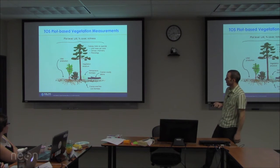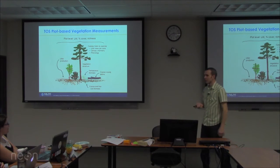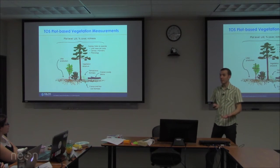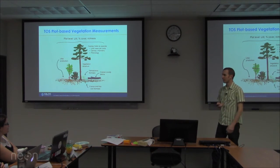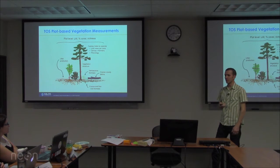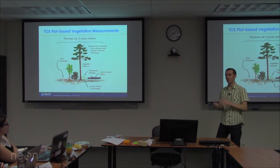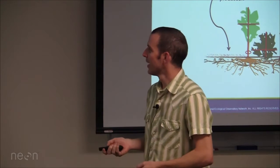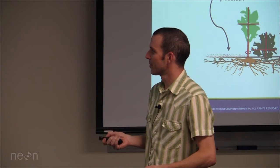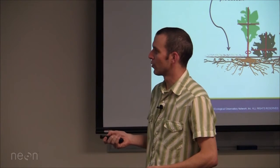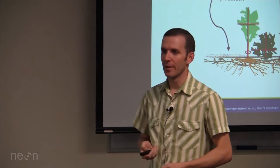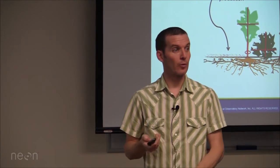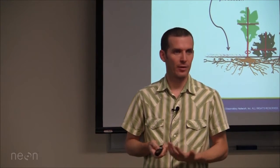I also want to mention coarse and fine roots. Roots can be estimated from remote sensing datasets using allometries that get you from above-ground to below-ground biomass, if you're comfortable with the assumptions involved. We'll have coarse and fine root core numbers to add to the picture of below-ground stocks of mass.